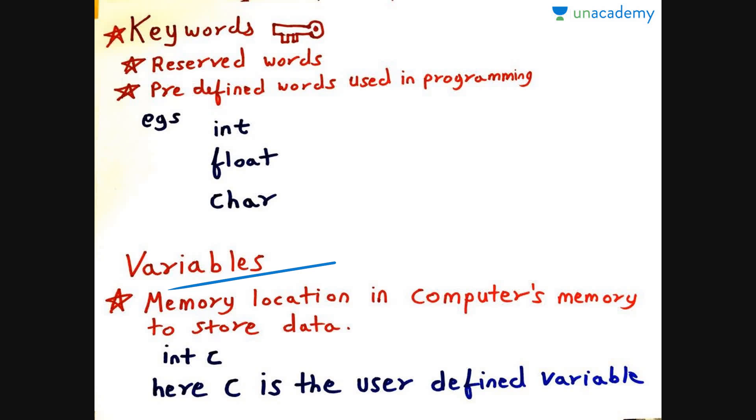The variable can be changed anywhere in the program. Suppose I declare int C value is equal to 5. Then I can change it to any value I want further in the program. I can change it to 6, 7, etc. Hence the name is variable.